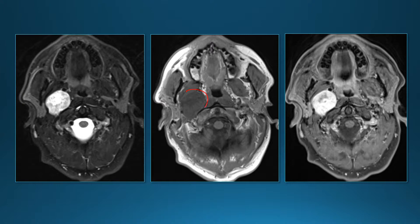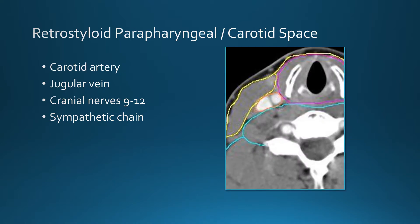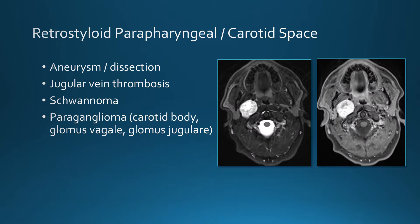Another mass located adjacent to the pharyngeal mucosal space could be called a parapharyngeal mass, but this one is in the retrostyloid parapharyngeal space, which is a continuation of the carotid space. In the carotid space or retrostyloid parapharyngeal space we have the carotid artery, jugular vein, cranial nerves 9–12, and the sympathetic chain. Pathology includes carotid aneurysms and dissections, jugular vein thrombosis, schwannomas of cranial nerves 9–12 or the sympathetic chain, and paragangliomas.